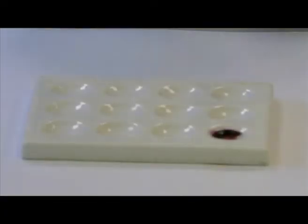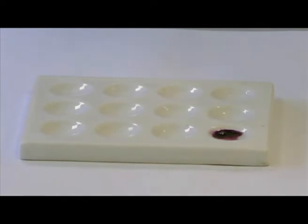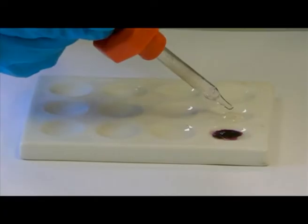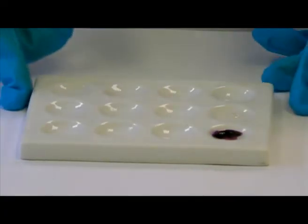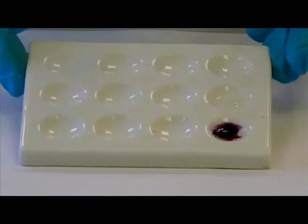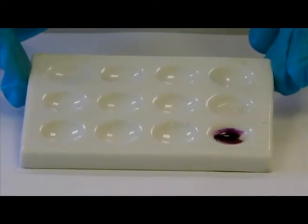The next step would be to add our marquis reagent into the well of the spot plate to produce our negative control. As you can see, it's negative because we've got a colorless solution. It's not changed color at all.